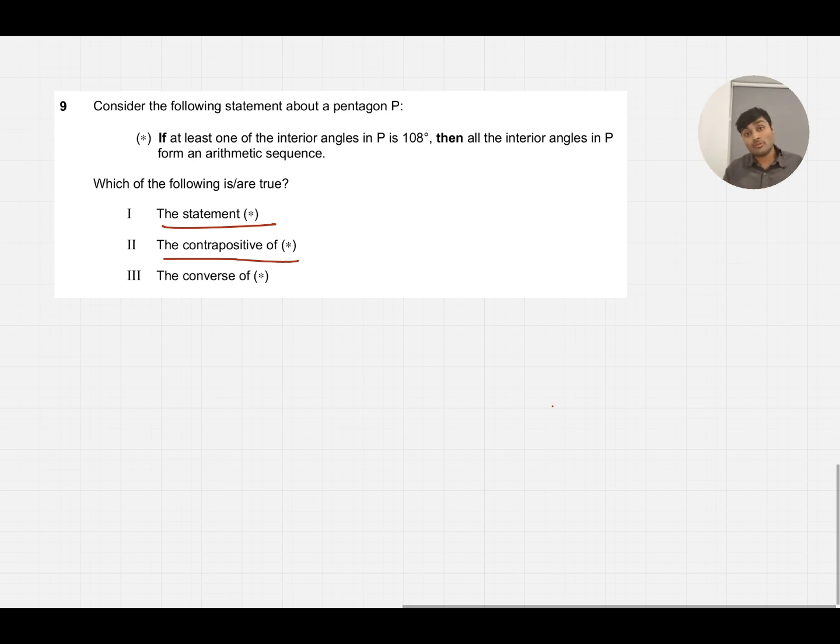Therefore, I could eliminate half the options straight away that have statement one and statement two disagreeing, because it's impossible for the statement star to be true but the contrapositive to be false, and vice versa. So any of the eight options that include this I can get rid of.